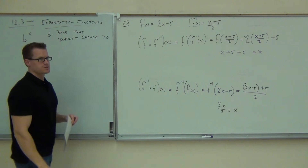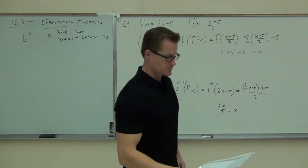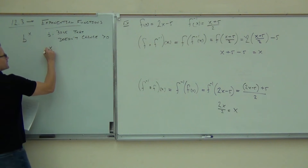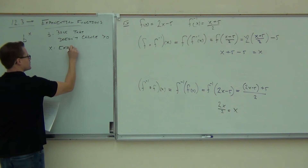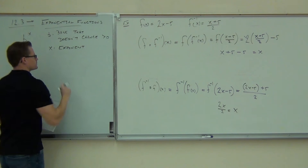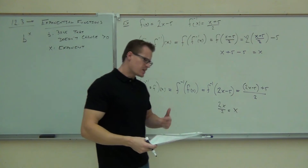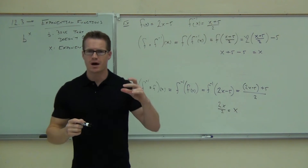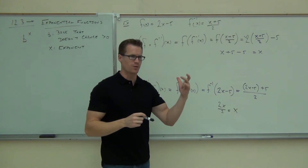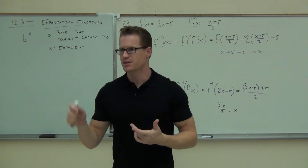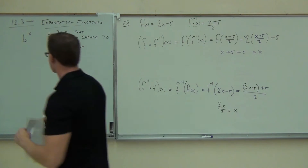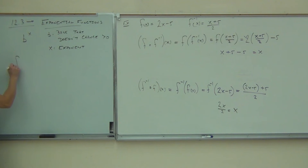B will be greater than zero — it won't be negative. X, our variable, is actually our exponent. So exponentials have a really unique look: instead of having a variable raised to a number, we now have a number raised to a variable. That's a weird idea — we've got this number raised to something that's changing. So an exponential function looks like this: F of X equals B to the X.